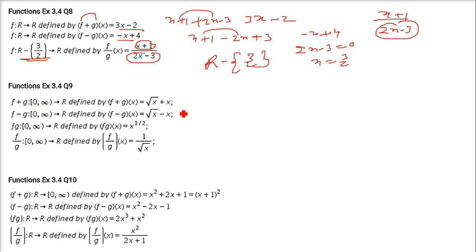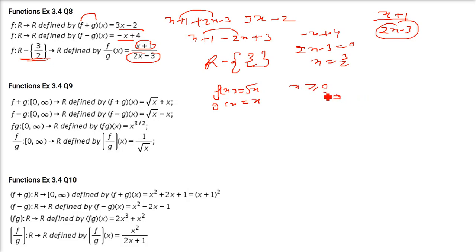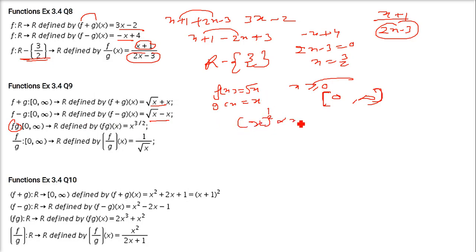Now f(x) = √x and g(x) = x. When we add or subtract them, the key constraint is that x inside the root cannot be negative — it must be greater than or equal to 0. So the domain for f + g and f − g is [0, ∞). For f·g, we multiply √x by x = x^(1/2) · x^1 = x^(3/2), and the domain is also [0, ∞).